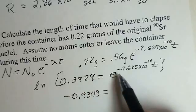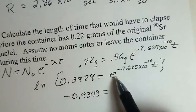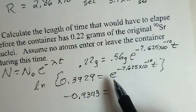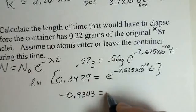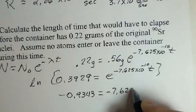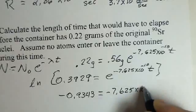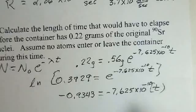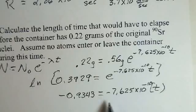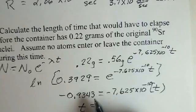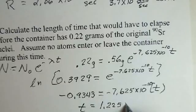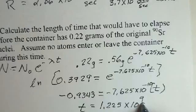When I take natural log of e to the power, these two functions are inverse functions of each other and they cancel. The natural log function will cancel the effect of the exponential function. So I just get the exponent, 7.625 times 10 to the minus 10 multiplied by T. And now, it's division. The minus signs will cancel. Divide 0.9343 by 7.625 times 10 to the minus 10, and you'll find T is equal to 1.225 times 10 to the ninth seconds. A billion seconds.